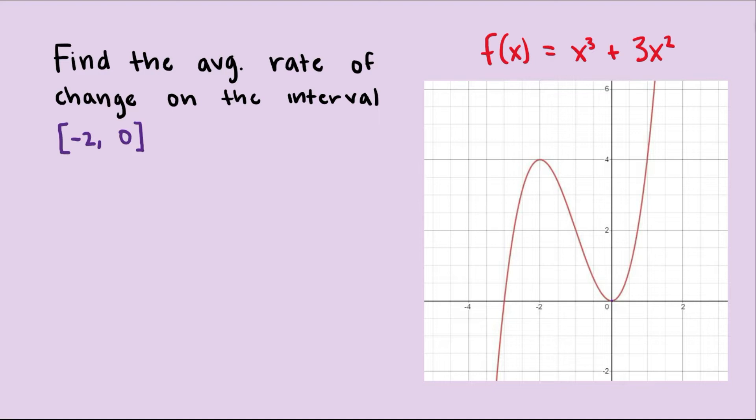Here we're given the function f(x) equals x cubed plus 3x squared, and we're asked to find the average rate of change on the interval [-2, 0].